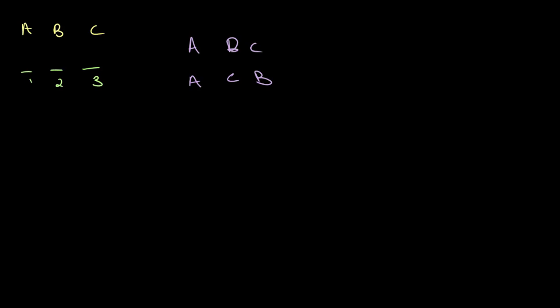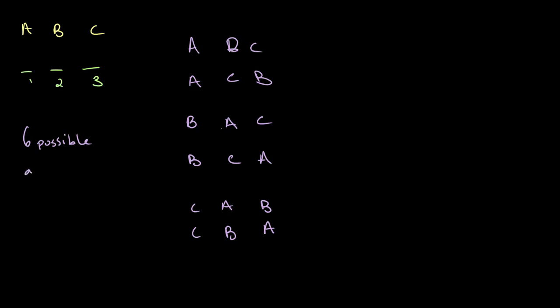We can then take the combinations when B is in chair one, so we have B, A, C and also B, C, A. Then we can look at all the combinations when person C is in chair one, giving us C, A, B and C, B, A — giving us a total of six possible arrangements.